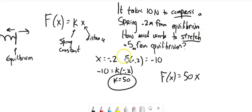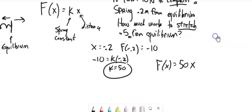Now we know F = 50x. To stretch 0.5 meters from equilibrium, the work is W = ∫₀⁰·⁵ 50x dx = 6.25 joules.